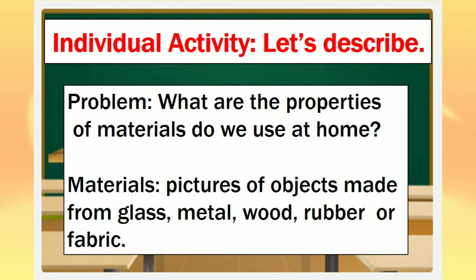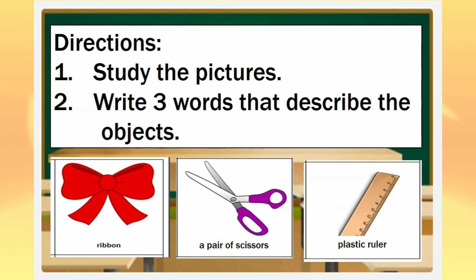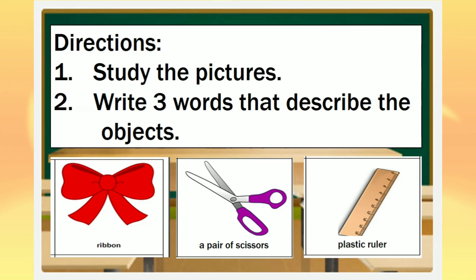Are you ready? Study the pictures, then write three words that describe the object. You can use your notebook to answer this activity. These are the given pictures: we have a ribbon, a pair of scissors, and a plastic ruler. Describe these objects in three words.